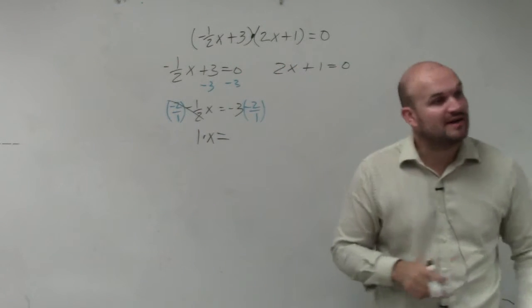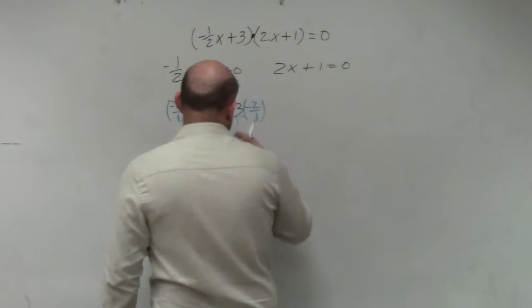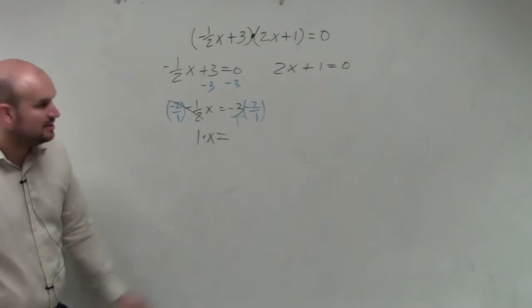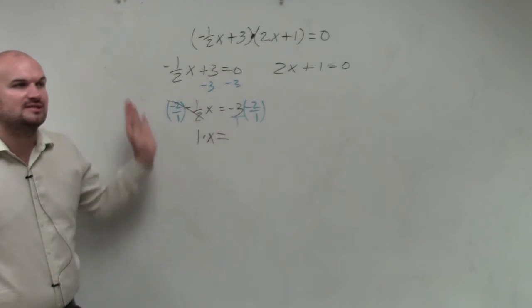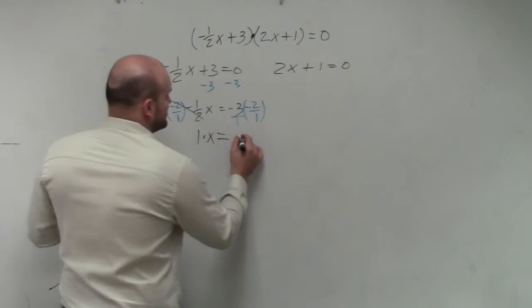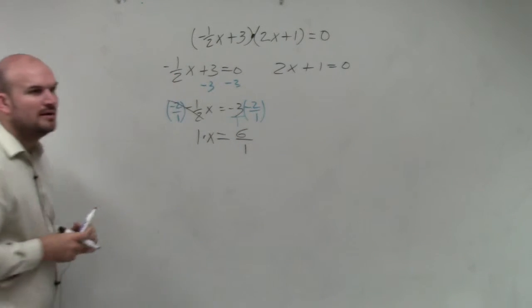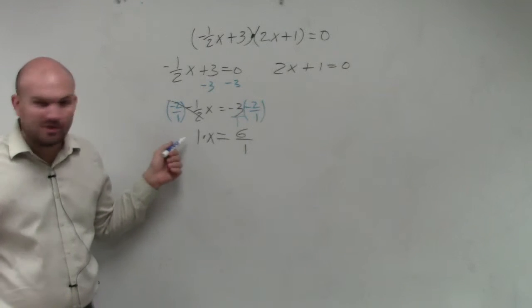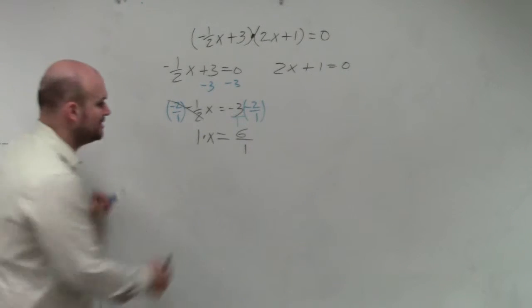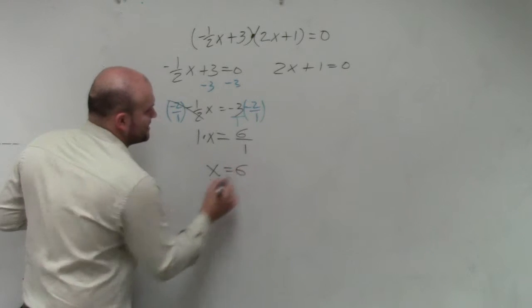And then remember, when you're multiplying a fraction times a whole number, rewrite your whole number as a fraction. Then you multiply numerator times numerator, denominator times denominator. So this is 6 over 1. However, we don't really need to write x being multiplied by 1 or 6 divided by 1. So your final answer would be x equals 6.